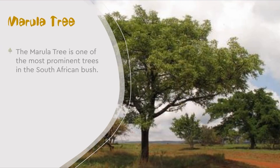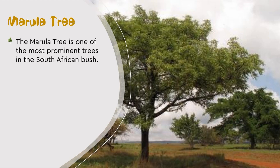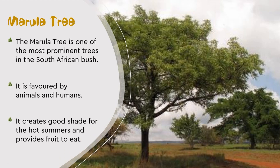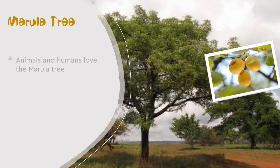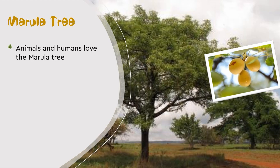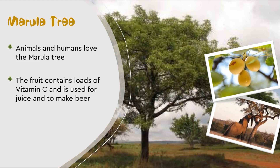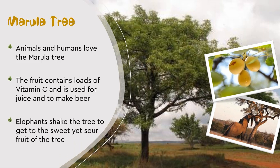The marula tree is one of the most prominent trees in southern Africa. It is favoured by animals as well as humans. It creates good shade in the summer and provides fruit to eat. The fruit contains a lot of vitamin C and people make juice and beer from it. Another famous drink that is made from it is marula cream. Elephants shake the tree to get to the sweet yet sour fruit.